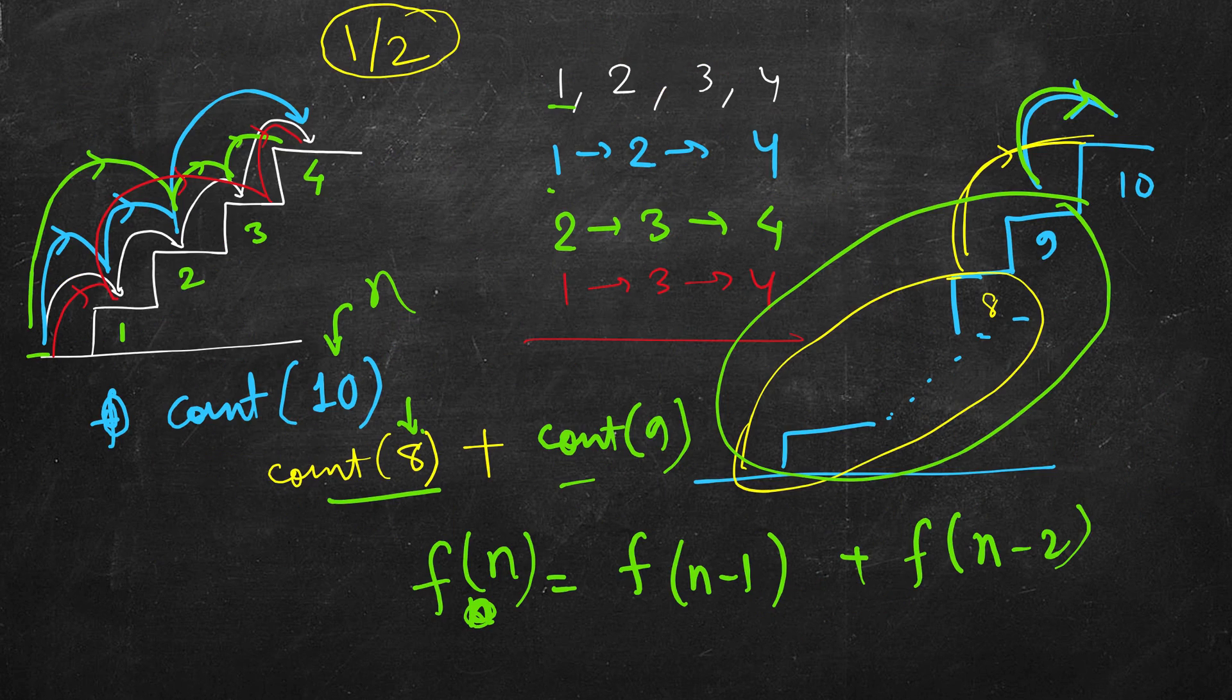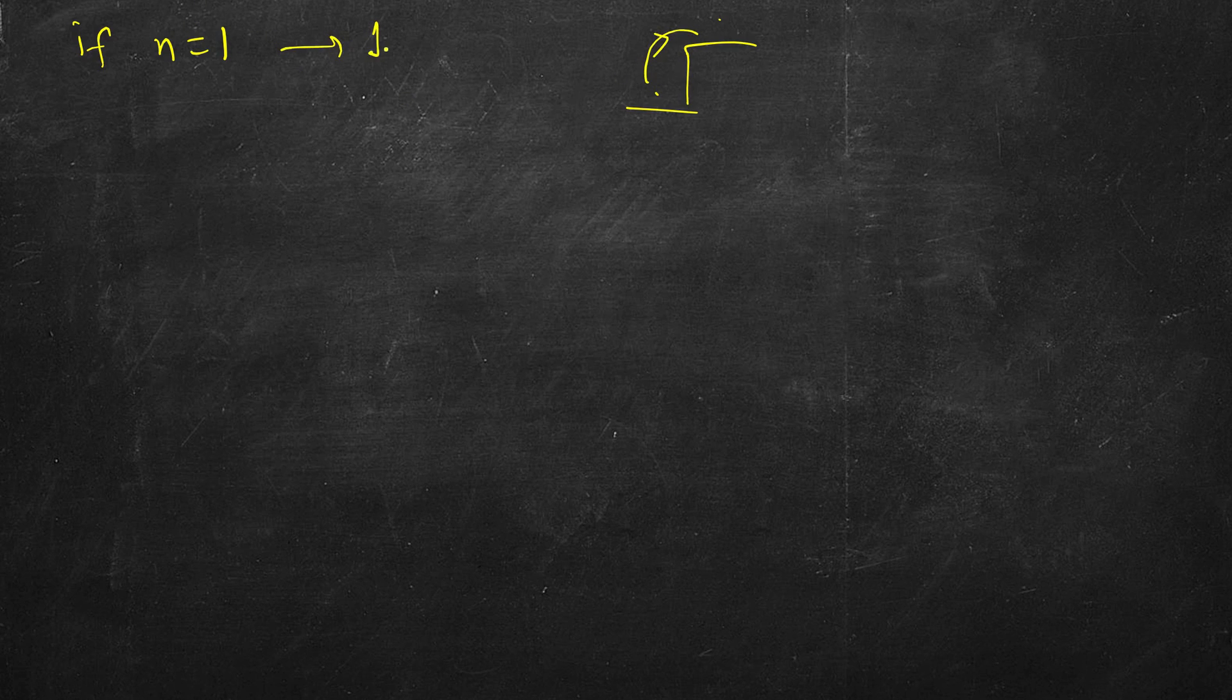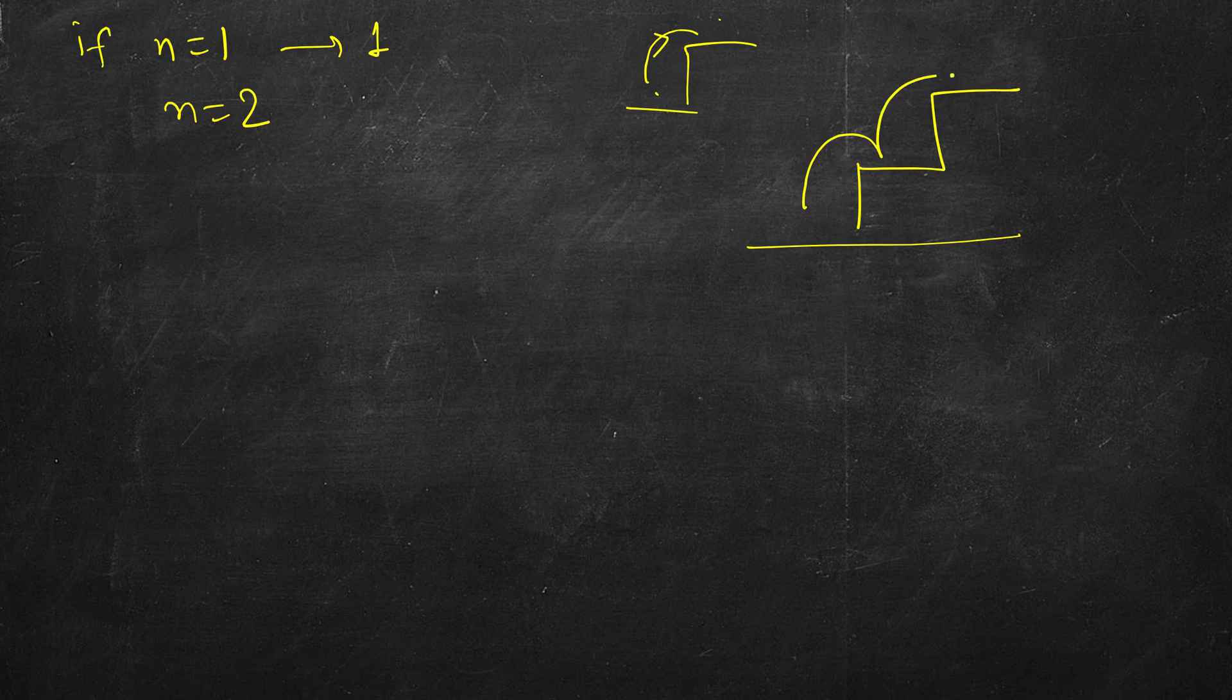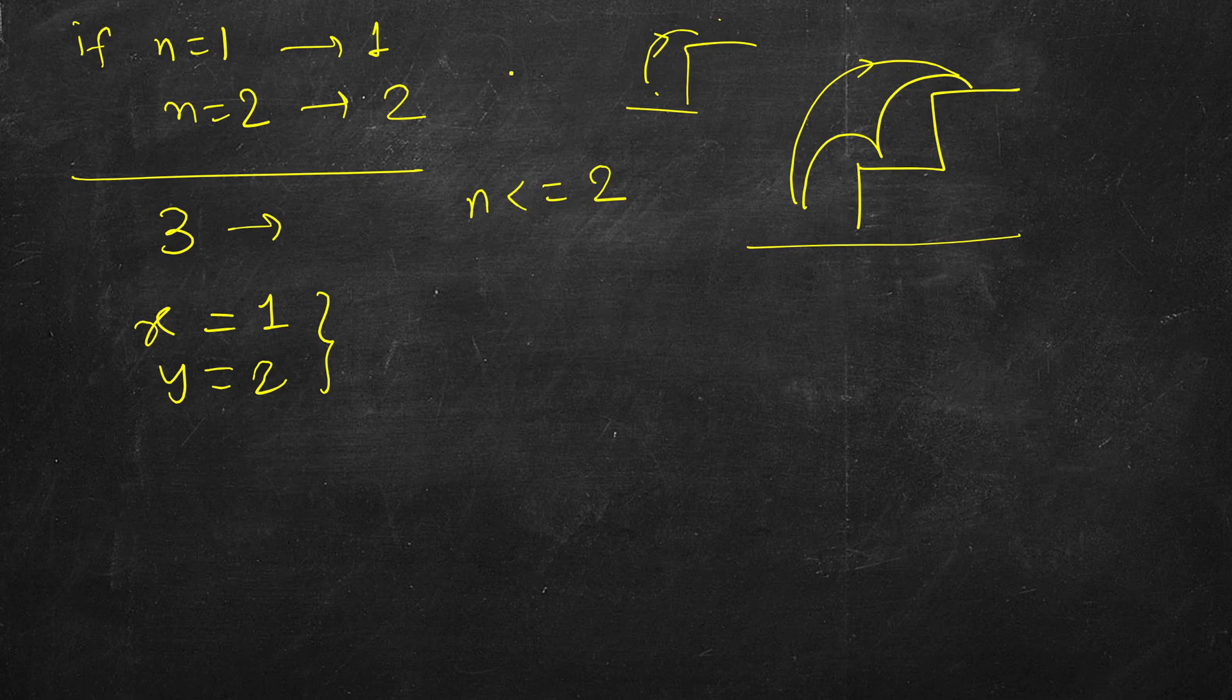So what we will do here we will start from the base case. If n is 1 then there is just one way. If we have two steps then you can go one at a time or you can directly go here, there are only two ways. And from three onwards what we will do, we already know 1 and 2. So we can keep two values x equal to 1, y equal to 2. And if n is less than or equal to 2, and n is guaranteed to be at least 1, if n is less than or equal to 2 you return n. And if n is more than 2 you return the previous two values. So for 2 it will be 1 plus 2 that is 3. For 4 it will be the solution for 3 and 2 that is 5.